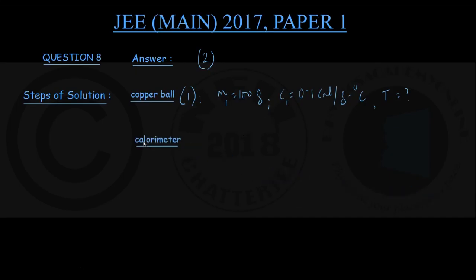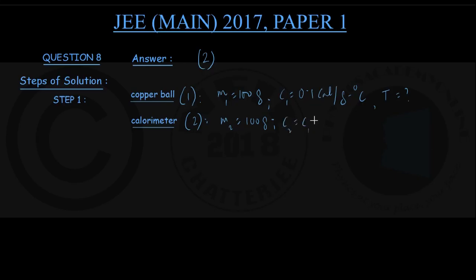Next item is calorimeter, this is my first step. Item number 2, the mass of calorimeter M2 is also 100 gram, made up of copper only. Specific capacity C2 is the same as C1, 0.1 calorie per gram per degree Celsius. And the temperature is room temperature, T2 is 30 degree Celsius.